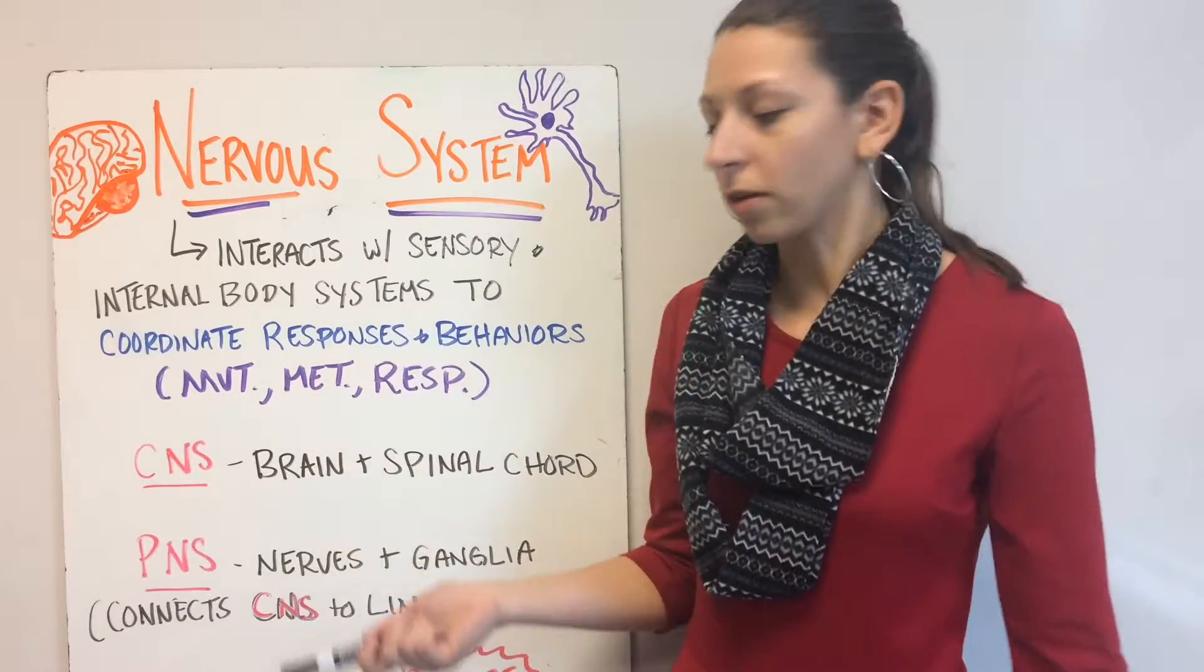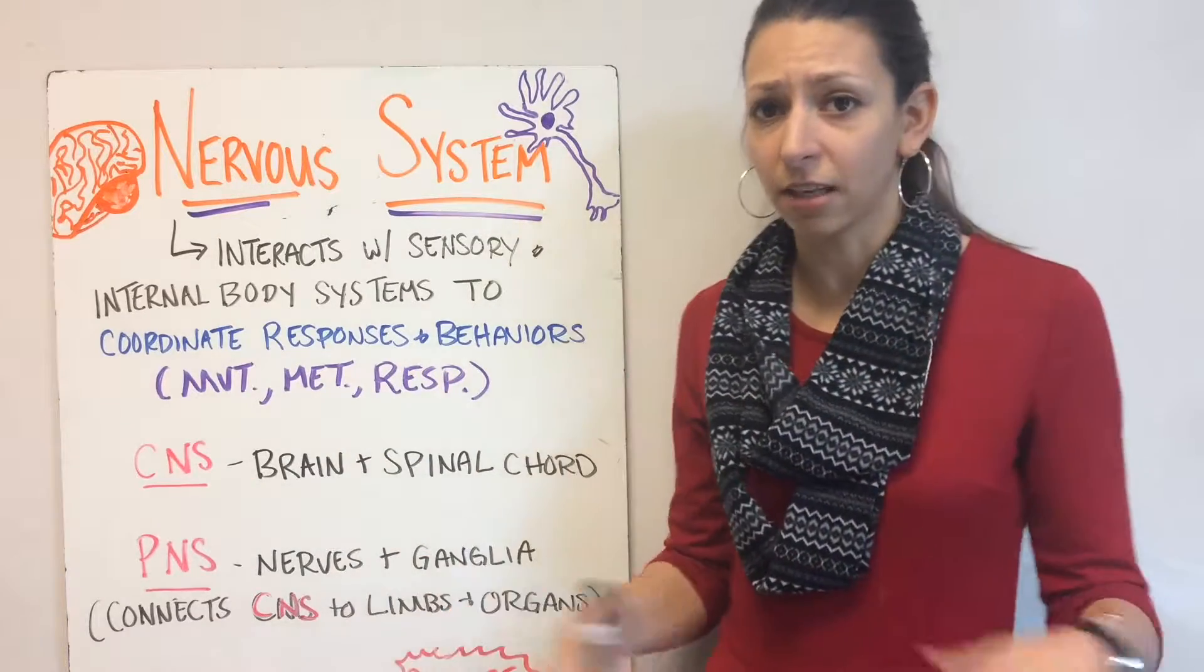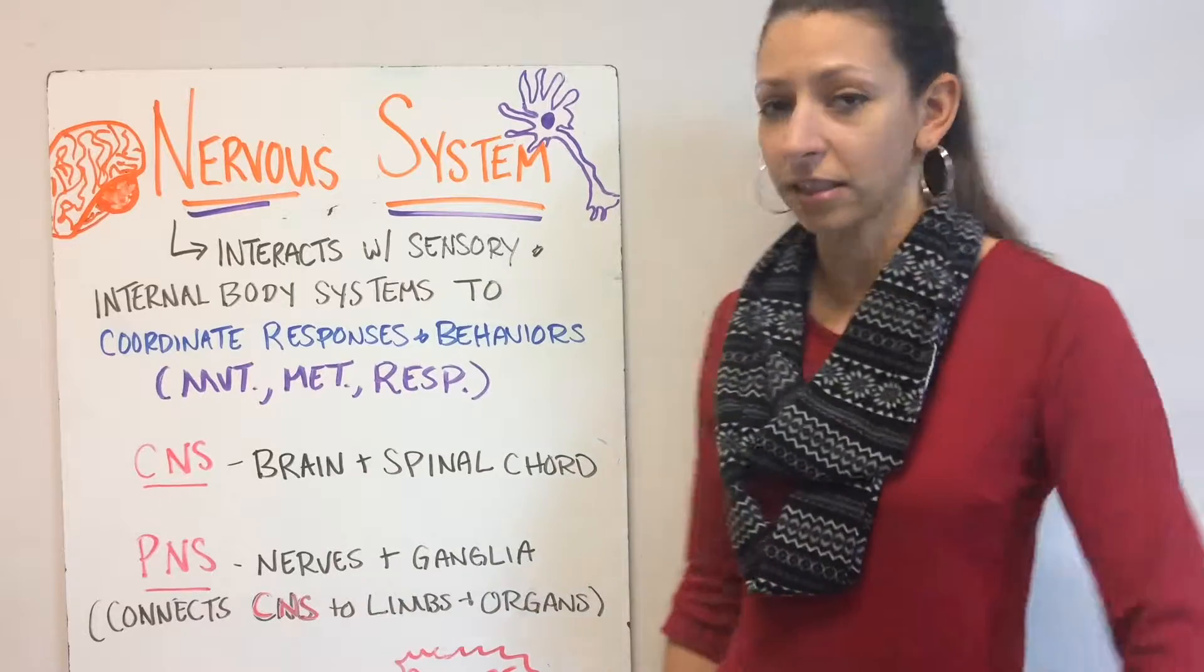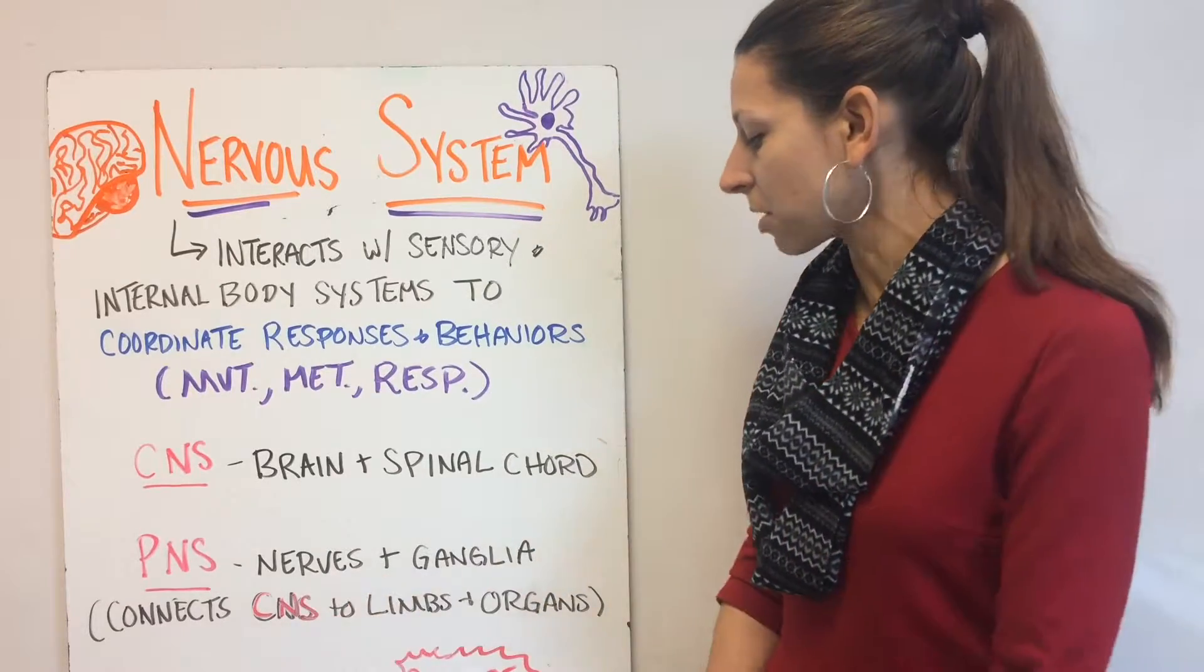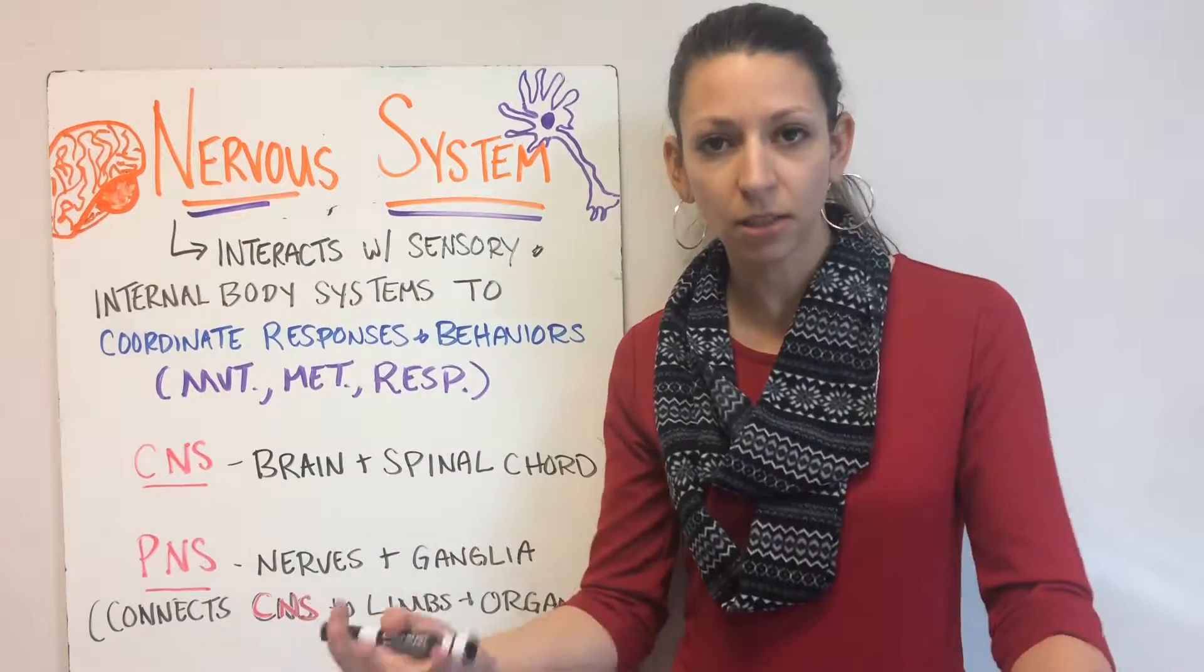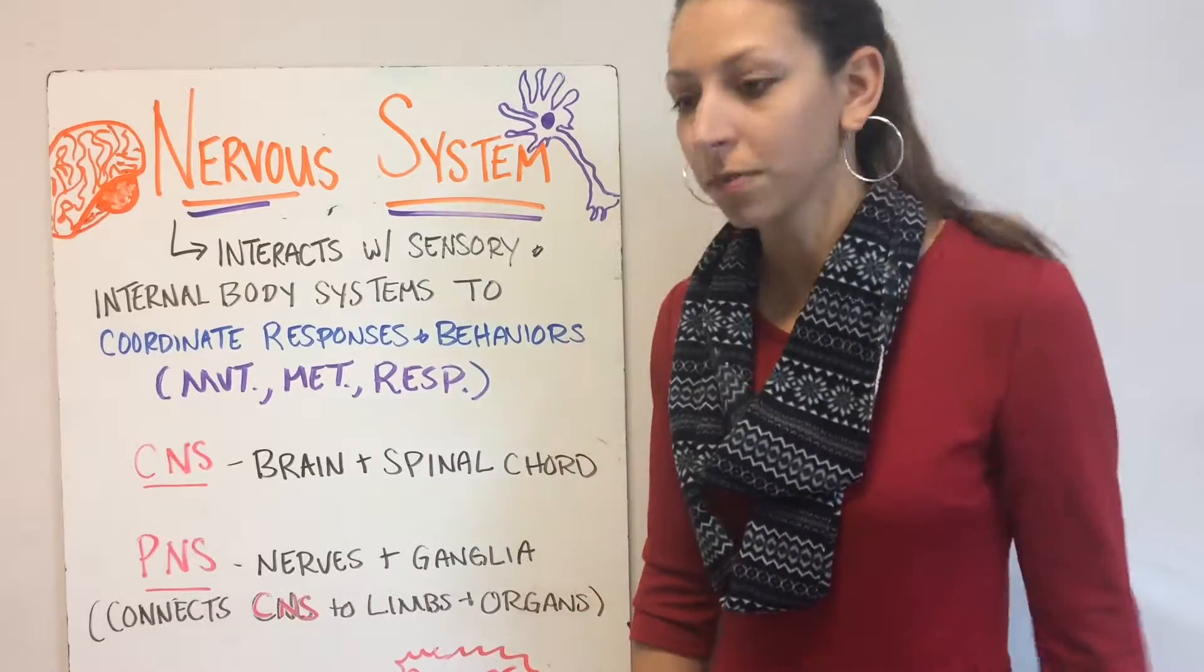The peripheral nervous system is your nerves and your ganglia, other nervous system cells. It connects your central nervous system to your limbs and organs so it can send signals to tell those things what to do.